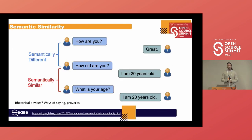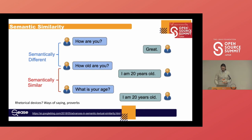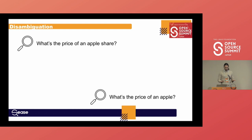In general, lexical search engines have problems with semantic similarity. Sometimes queries like 'how are you?' and 'how old are you?' share most query terms but have completely different meanings. Conversely, semantically similar queries like 'how old are you?' and 'what is your age?' share no query terms at all. You may also have disambiguation problems: 'what's the price of an apple share?' versus 'what's the price of an apple?' clearly have different contexts — one refers to Apple as a company, the other to the fruit.